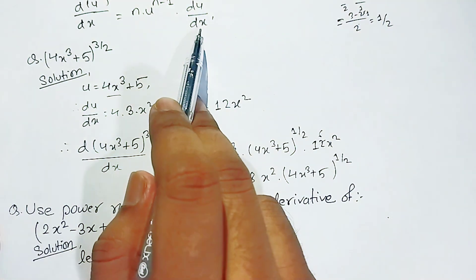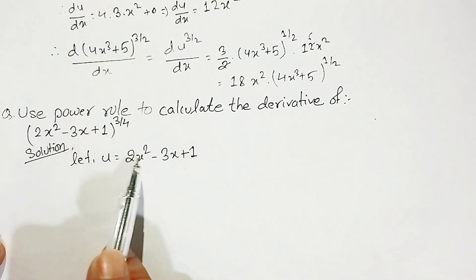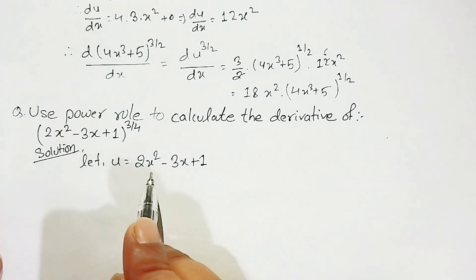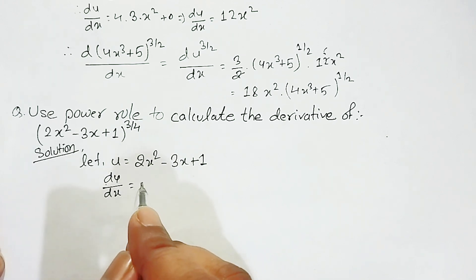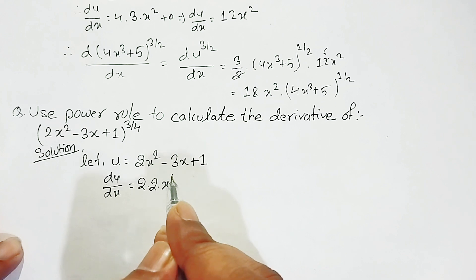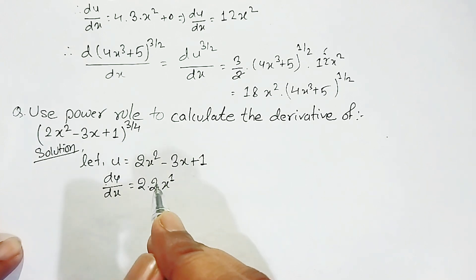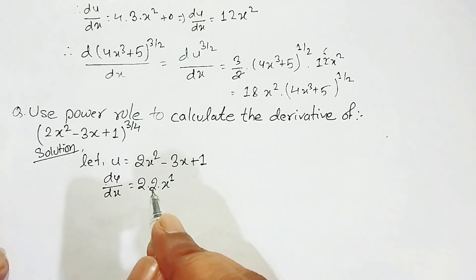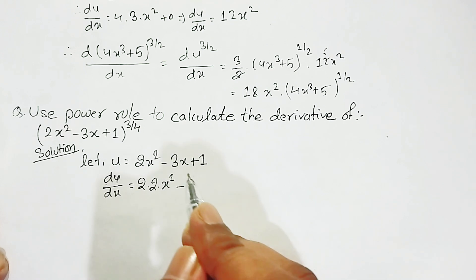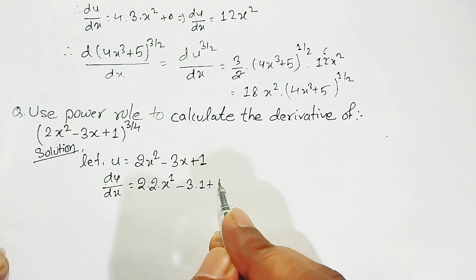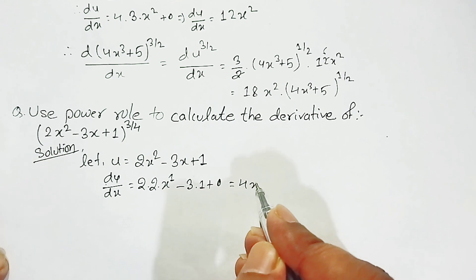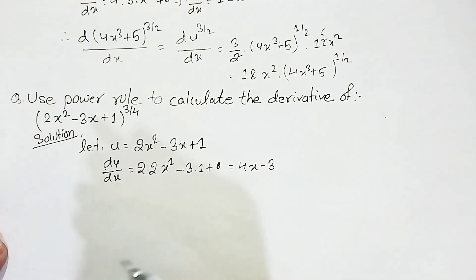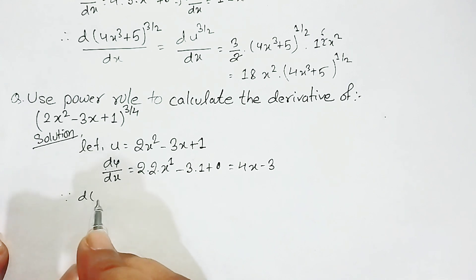We find du upon dx. The derivative of 2x² is 2 times 2 times x to the power 1, which is 4x. The derivative of -3x is -3, and the derivative of the constant 1 is 0. Therefore du upon dx equals 4x minus 3.